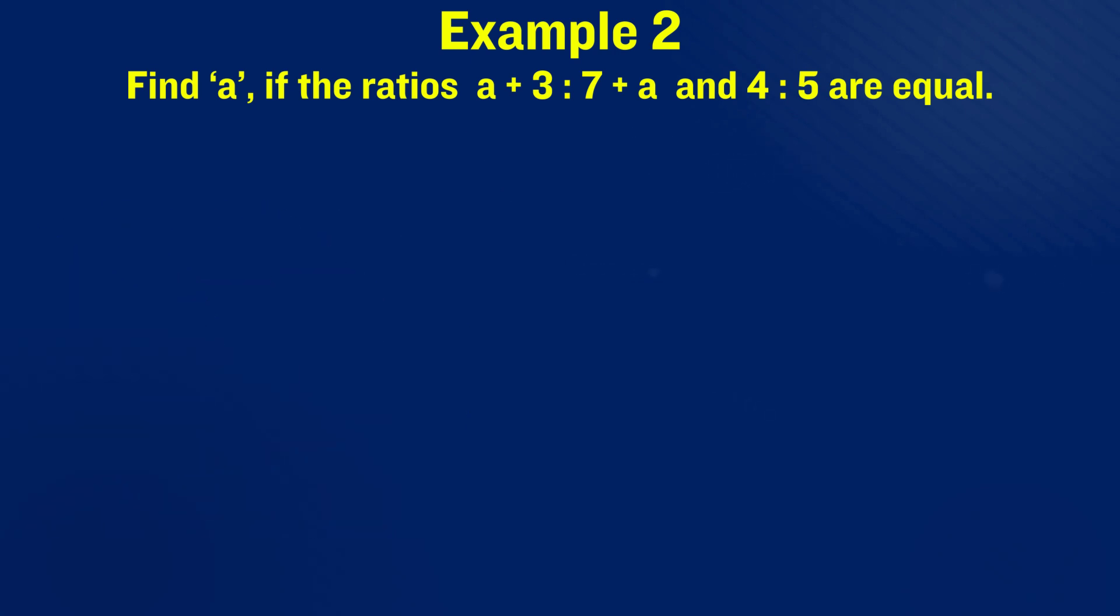Let's write them in their fractional forms and then equate them to each other. All we have to do is cross multiply the fractions: 5 is multiplied by a+3, and on the right side 4 is multiplied by 7+a. With a bit of simplification we are left with this.